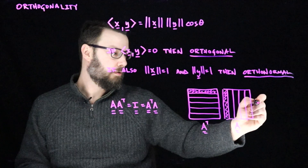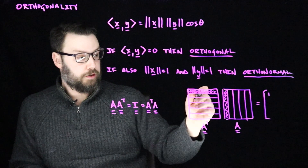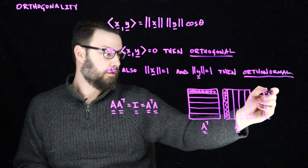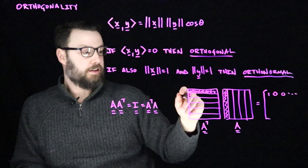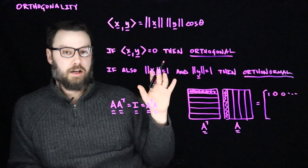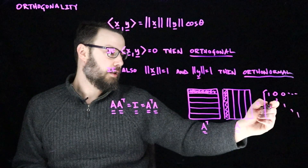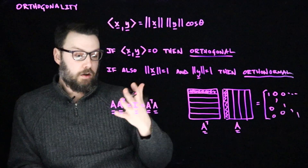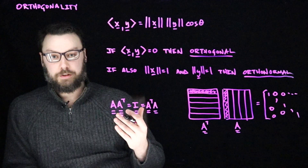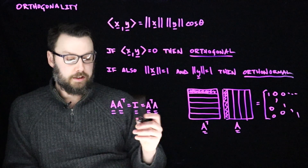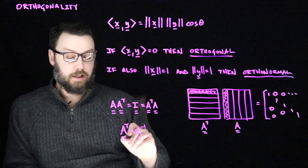If we take a column vector and dot it with itself, we get one — so we get a one in the upper left corner. Because it's orthogonal to the others, multiplying it by any other column gives zero. Since each vector only has a non-zero dot product with itself, and that dot product is one, we get ones along the diagonal and zeros everywhere else. This implies that the transpose is the inverse — A transpose equals A inverse.